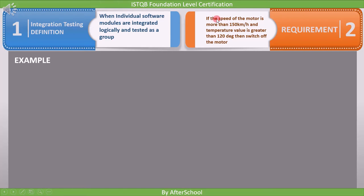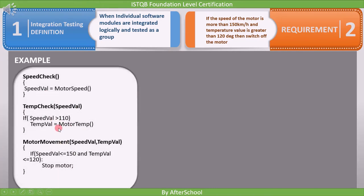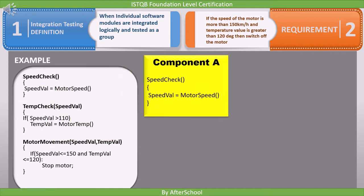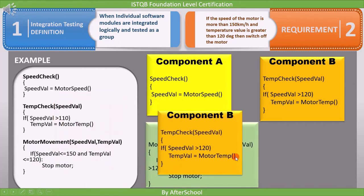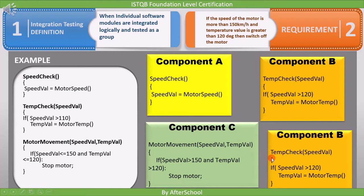Suppose our customer has given us the same requirement: if the speed of the motor is more than 150 km per hour and temperature value is greater than 120 degrees, then switch off the motor. For integration testing, we take two components — like A and B — and test them together. What we are checking is: if the value of speed in A is rising, is the value of temperature in B also rising? This shows us the interaction between the two modules. We can also perform this test on components C and B. Remember, you need at minimum two units, and at maximum all three components together.